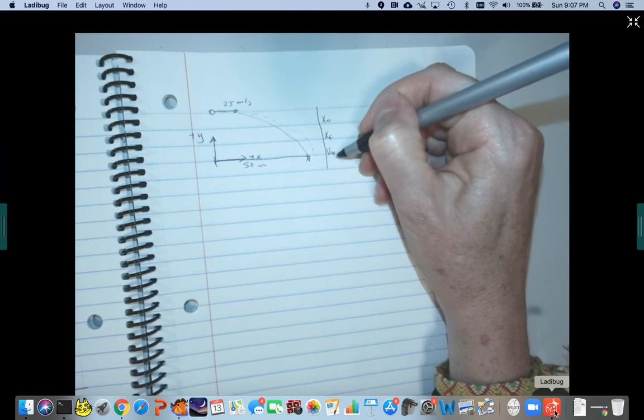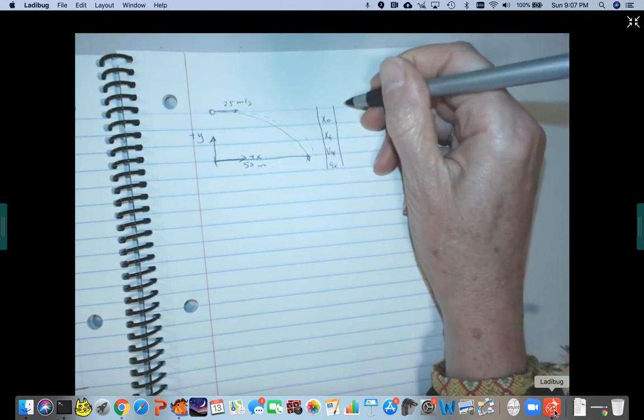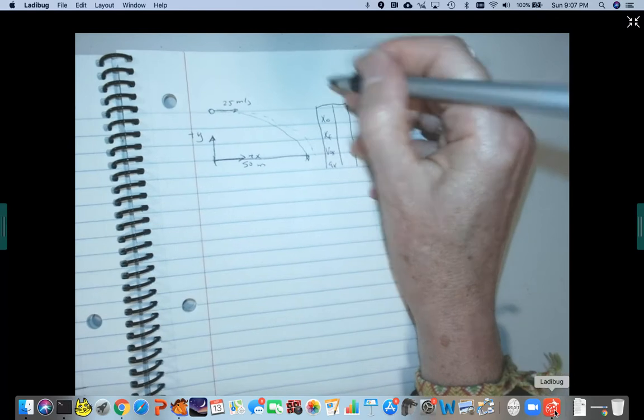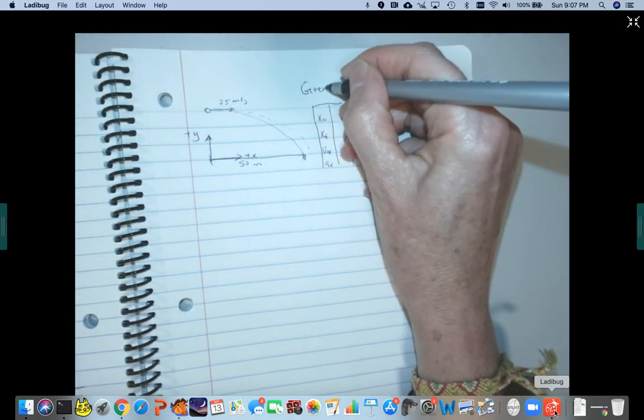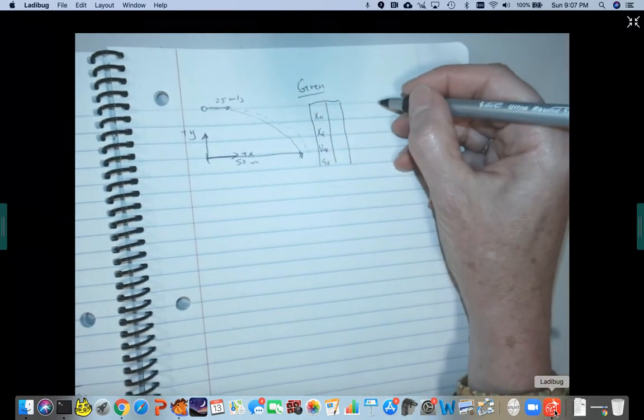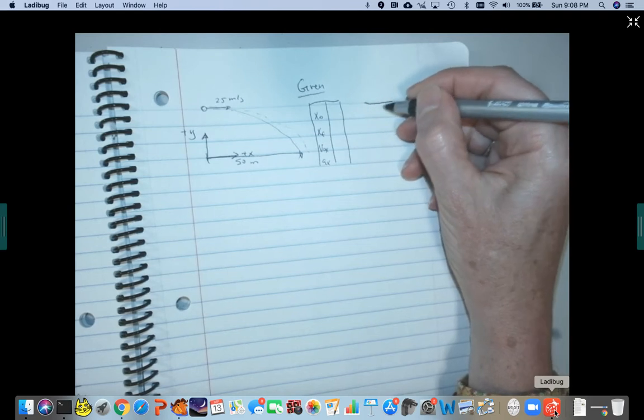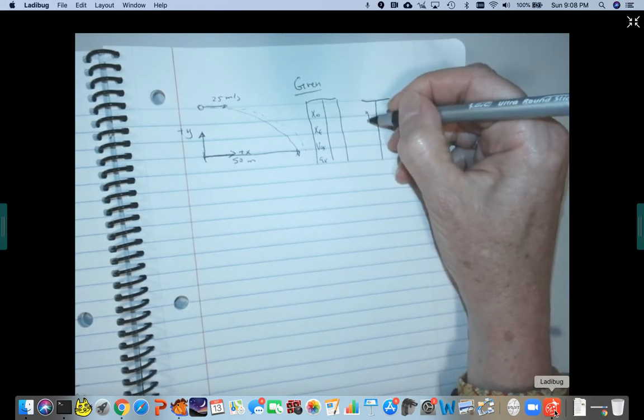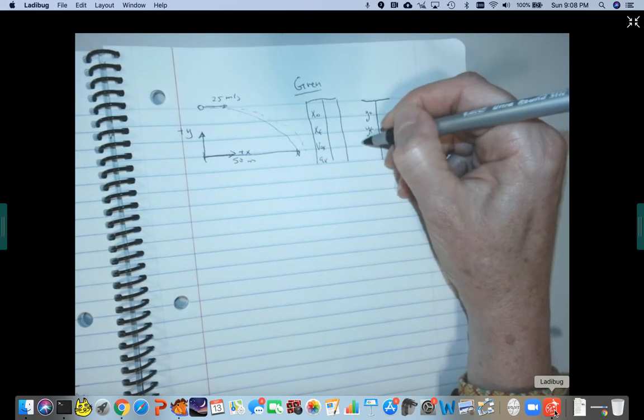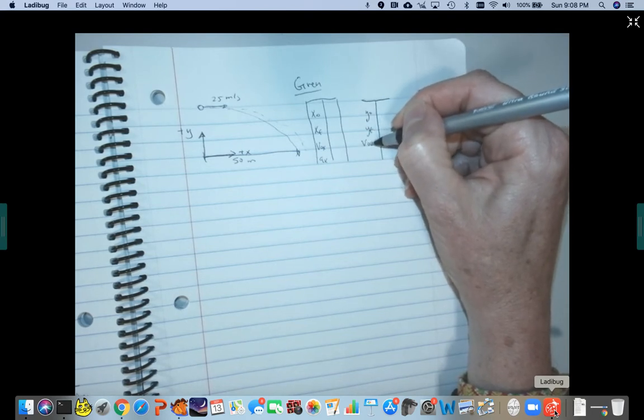And then I am given x0, x final, v0x, ax. So we'll do some givens. And then we can do our y direction as well. Sometimes I just draw it as a T here instead of the whole box. x, y0, y final, v0y, and ay.